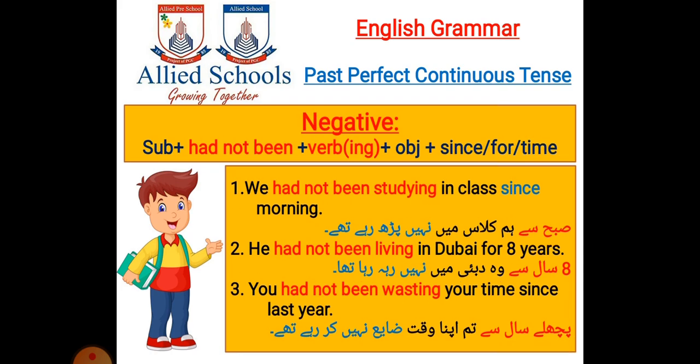The negative structure is: subject plus had not been — we just add 'not' after 'had,' and the rest of the structure remains the same. Number one: We had not been studying in class since morning. Subha se hum class mein nahi parh rahe thi. Number two: He had not been living in Dubai for eight years. Aat saal se wo Dubai mein nahi rah raha tha. Number three: You had not been wasting your time since last year. Pichle saal se tum apna waqt zaya nahi kar rahe thi.